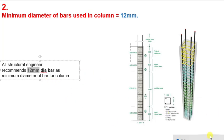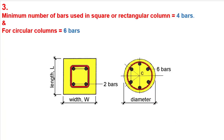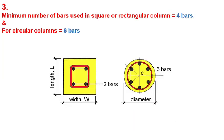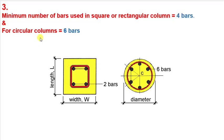The next point is the minimum number of bars. The previous point was the minimum diameter of the bar allowed in a column, which was 12 millimeters. Now, minimum number of bars — we can have a square, rectangular, or circular column. Based on the shape, the criteria for minimum number of bars varies. For square and rectangular columns, the minimum number of bars is 4.